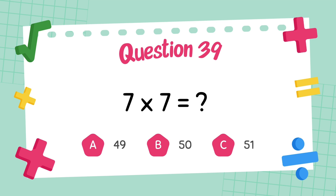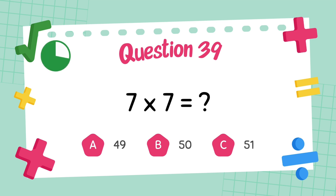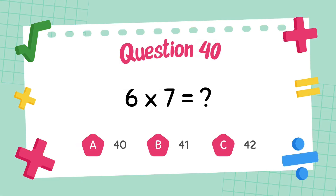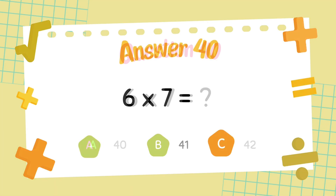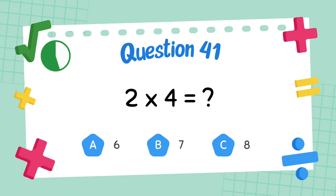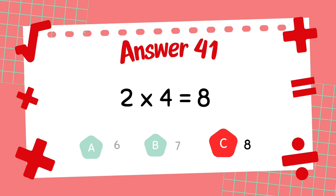What is 7 x 7? The answer is 49. What is 6 x 7? The answer is 42. What is 2 x 4? The answer is 8.